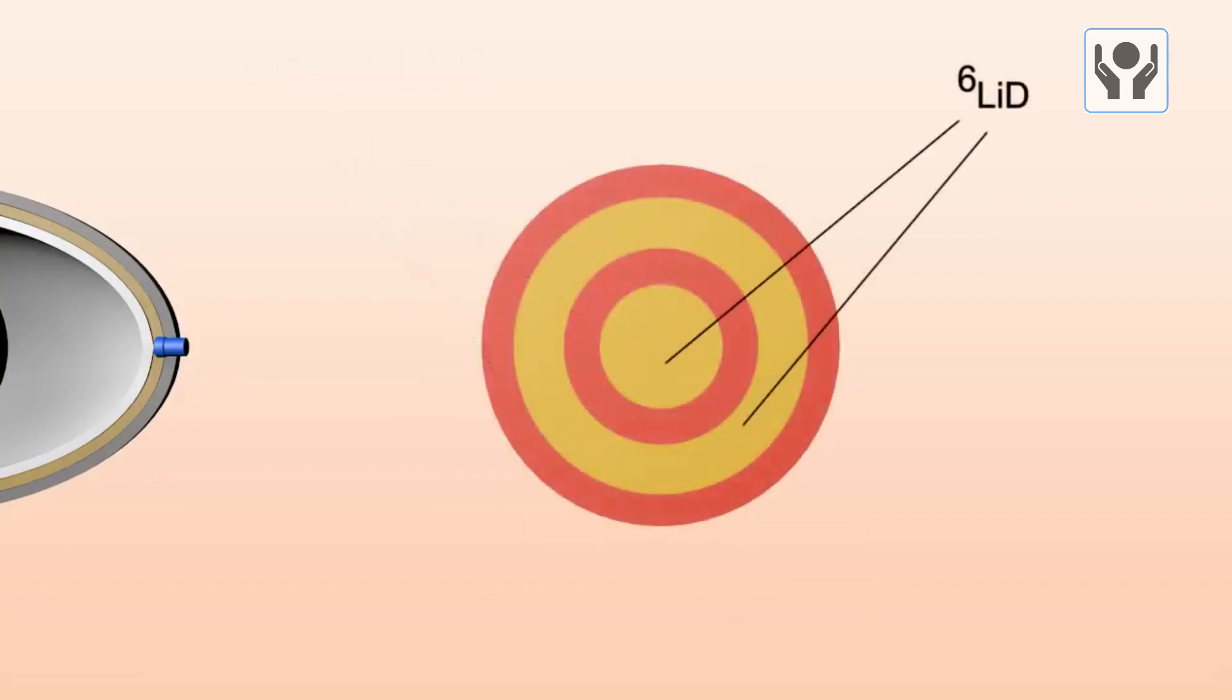The primary stage contains a fissile material, typically plutonium, that is used to initiate the nuclear chain reaction.